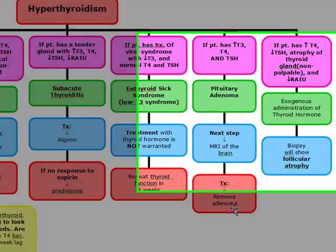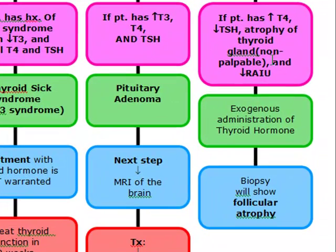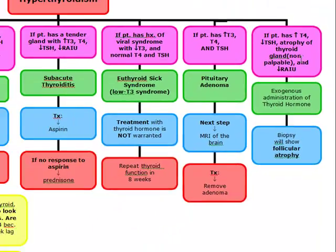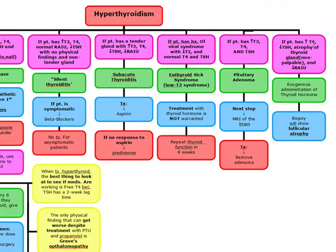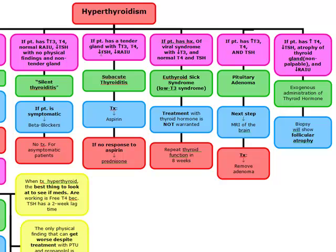Finally, you have a patient with a non-palpable thyroid gland with an increased T4, a decreased TSH, and a decreased radioactive iodine uptake. This patient — you're thinking exogenous administration of thyroid hormone. The biopsy is going to show follicular atrophy. So increased T4, decreased TSH, decreased radioactive iodine uptake, and atrophy of the thyroid gland.